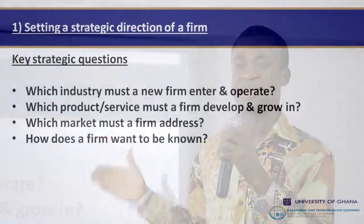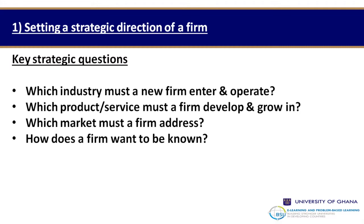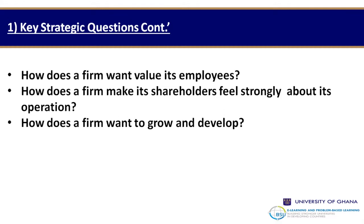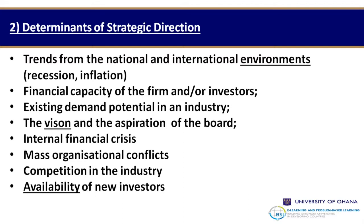These questions are robust — in fact one of them can take a week before management can arrive at an answer, because it has a lot of consequences and implications. The summary is that the first step to determining direction is that organizations must address key questions, especially for profit-making organizations. Certain key questions must inform how we carve a direction for a firm.